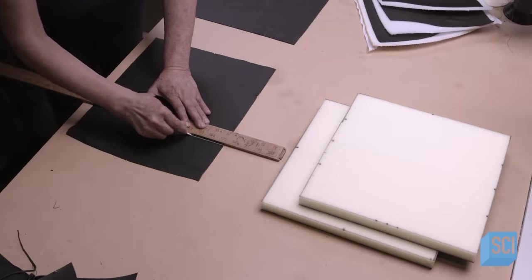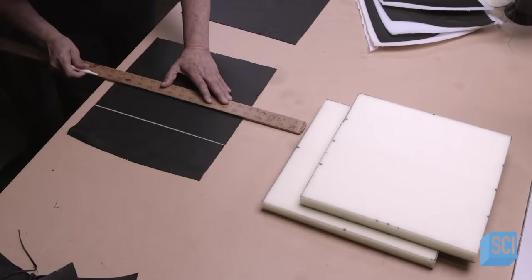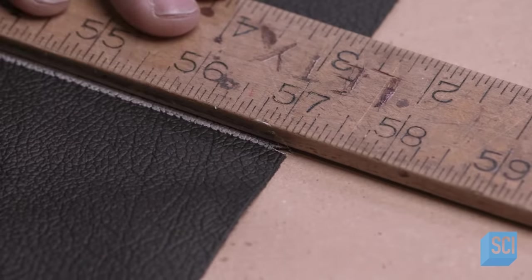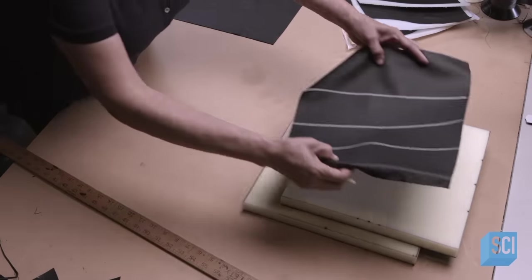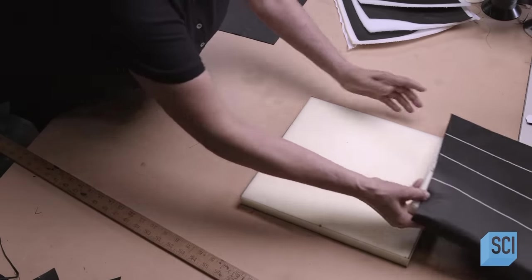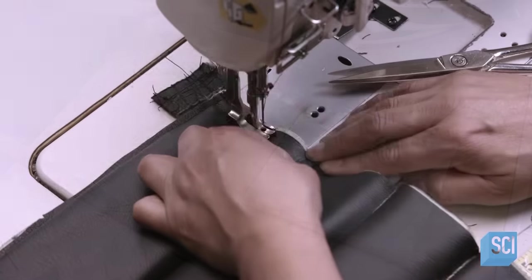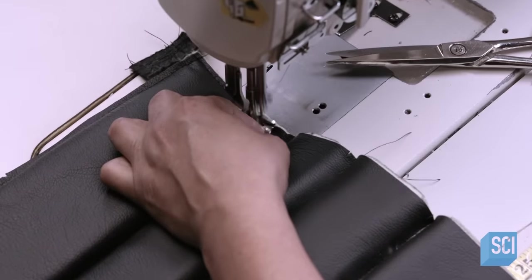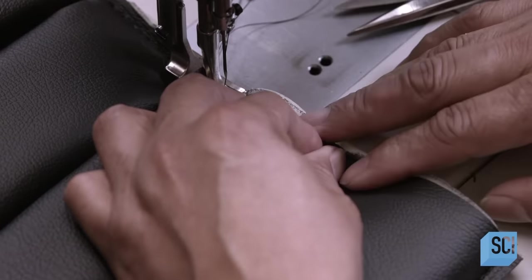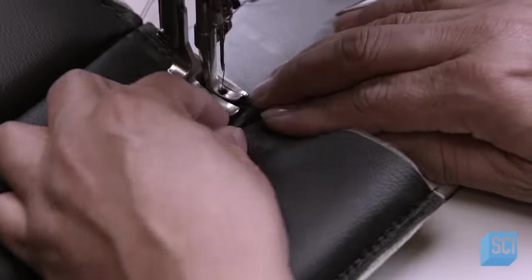Using chalk, he draws lines onto the corresponding leather that match up with the slits in the foam. A worker aligns the chalk lines in the leather with the slits and puckers the leather as he sews the backing to it. This forms a rib pattern in the upper half of the chair upholstery.